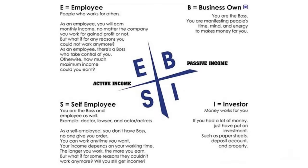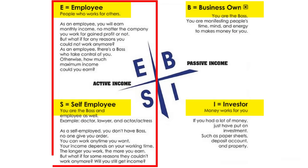And for those of you who don't know what that is: employee, self-employed, business, investor. So most of us start off on the left side of the quadrant, the E and the S side, as employees.